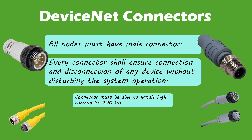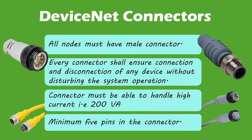DeviceNet supports a range of connectors for connecting equipment onto the bus and drop lines, with a few conditions that must be followed. All nodes must have male connectors. Irrespective of the connector chosen, it must be ensured that the device can be connected or disconnected without disturbing system operation. Connectors must handle a high level of current — 8 amperes at 24V. A minimum of 5 connecting pins must be available, with an optional 6th pin for ground. A metal body can also be used for ground.